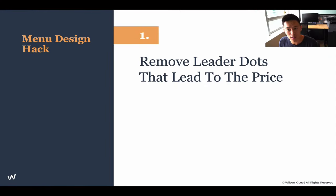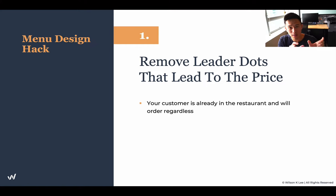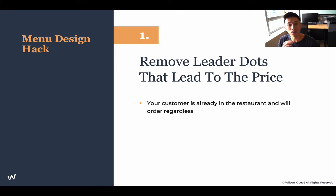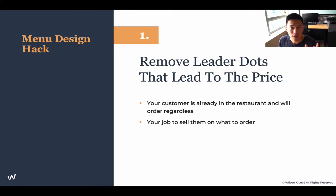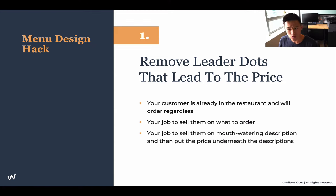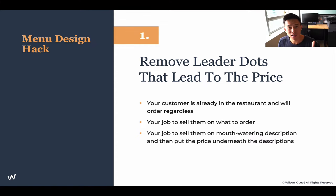Tip number one: remove leader dots that lead to the price. Those are the dots that go from your menu item — dot, dot, dot — to the price. This is completely irrelevant because when people are coming to your restaurant, they're going to order regardless. You're wasting space and leading them to focus on the price. We want to focus on the description, on what they're going to be eating. Your job is to sell them with a mouthwatering description — like a truffle meatball spaghetti. That's the focus. Removing those leading dots allows them to focus on the menu item itself.